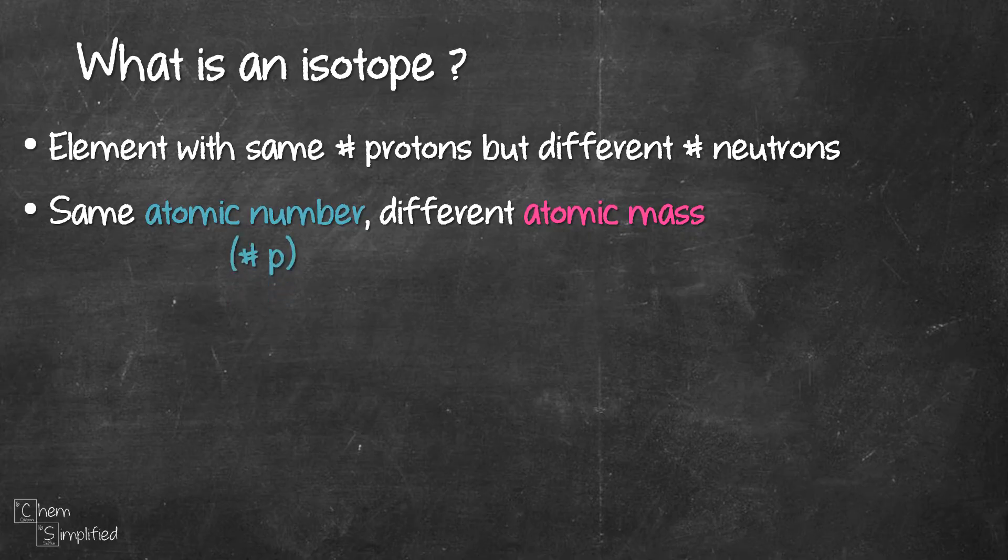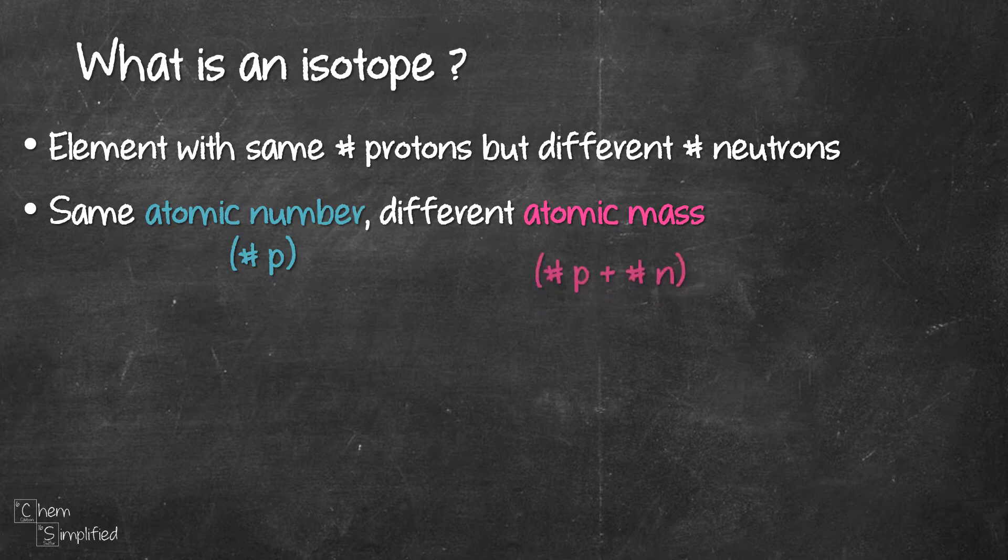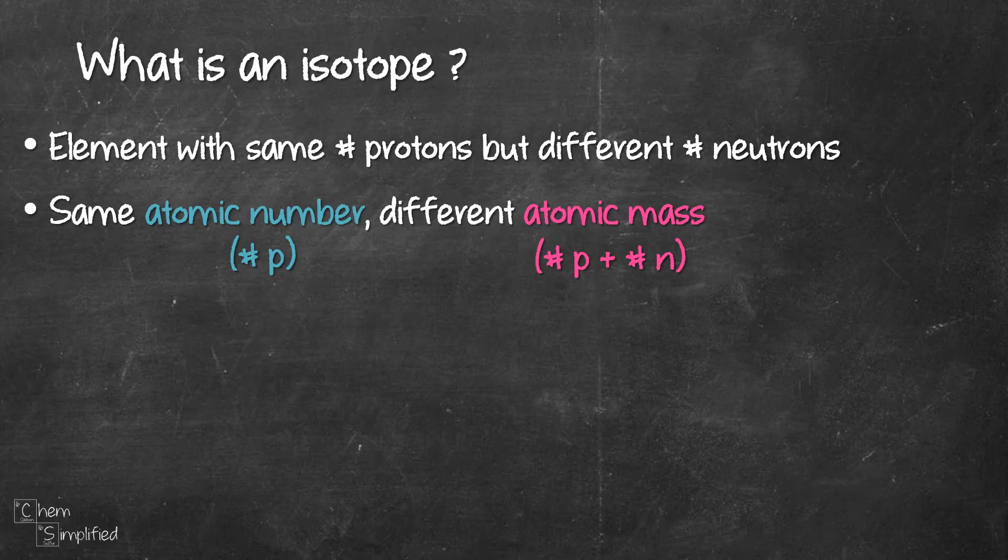Just a quick recap, atomic number represents the number of protons, whereas atomic mass is the sum of number of protons and number of neutrons. And that's why isotopes have the same atomic number but different atomic mass. It's because of the difference in number of neutrons.